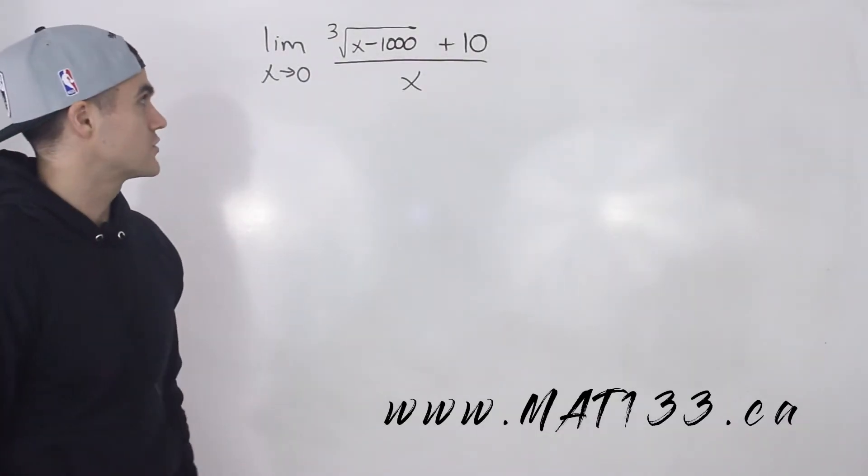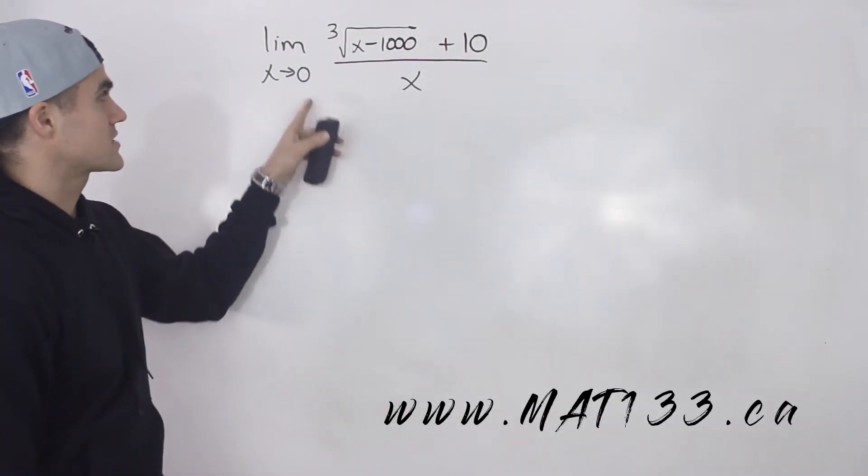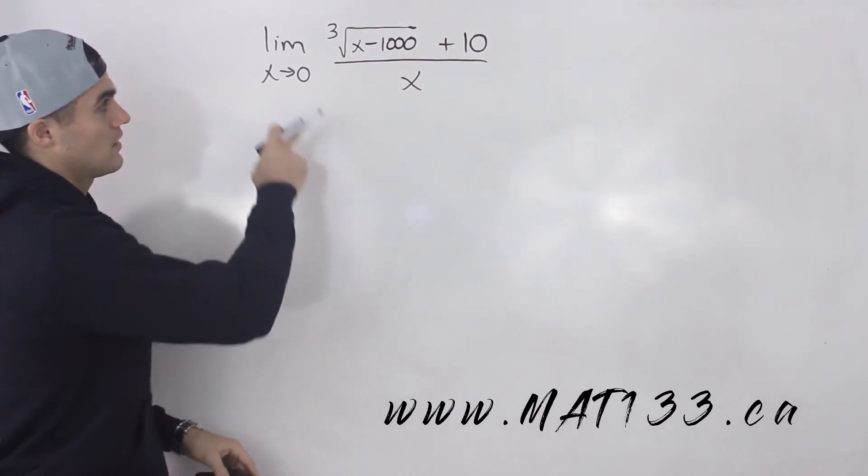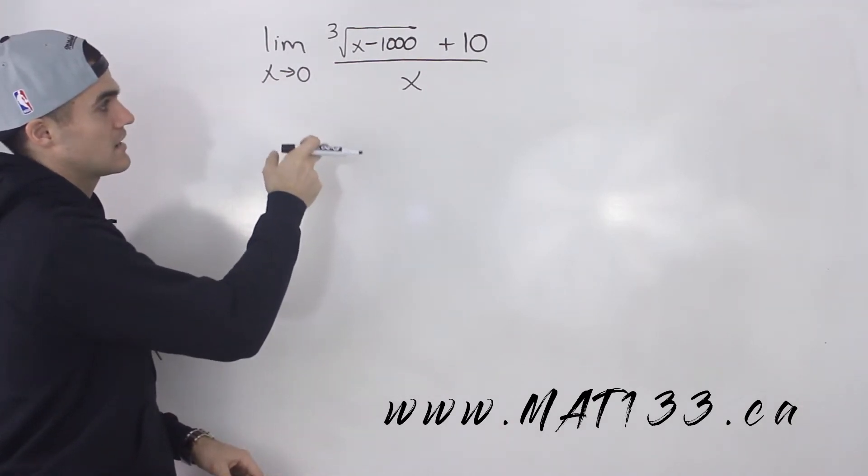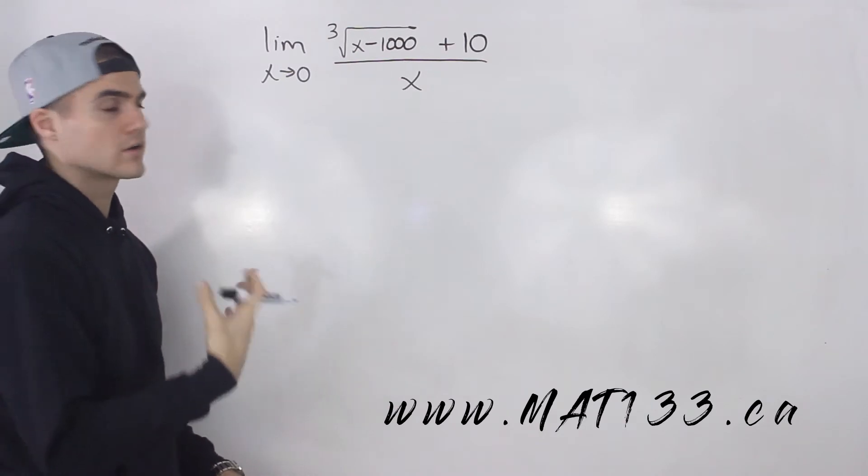Welcome back everybody, Patrick here. Moving on to another question, we got the limit as x approaches 0 of the third root of x minus 1,000 plus 10 all over x.